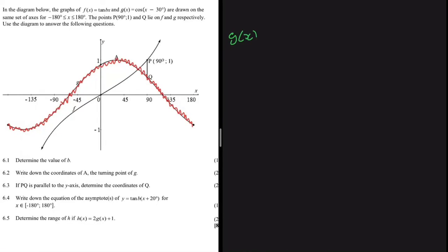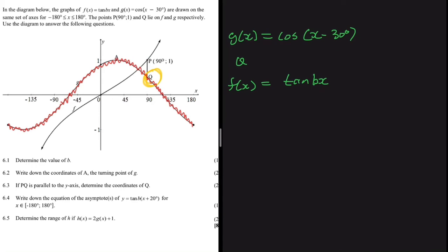The graph shown is g(x) = cos(x - 30°), and there's a point Q on g(x). The other graph is f(x) = tan(bx), and on f(x) we have a point P with coordinates (90°, 1).